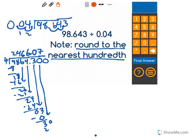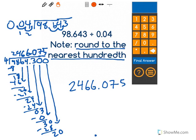And this should be the last time that we write this. We'll bring down this last 0 and have 20 divided by 4, which is equal to 5. So now your answer is 2,466.075.